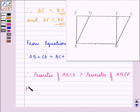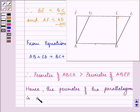So, in the end, we can write down that, hence, the perimeter of the parallelogram is greater than the perimeter of the rectangle.